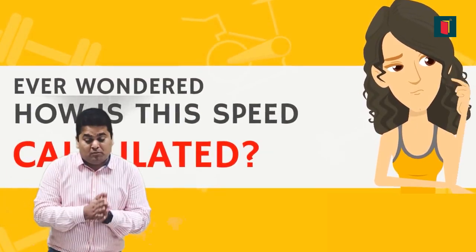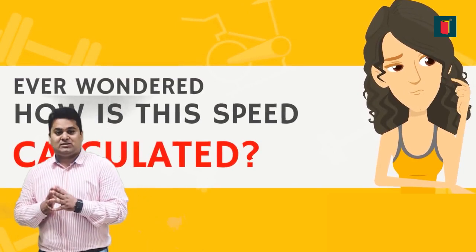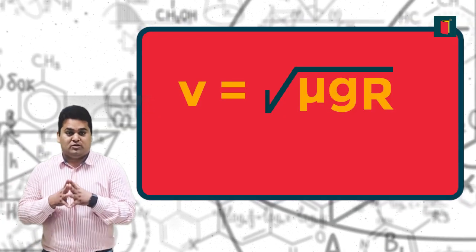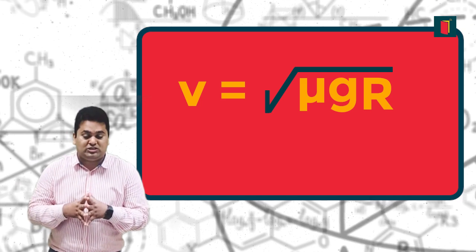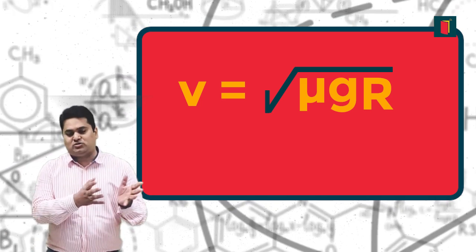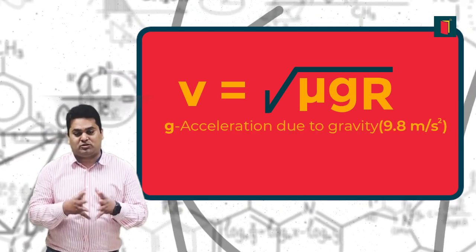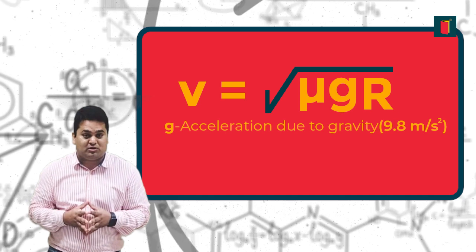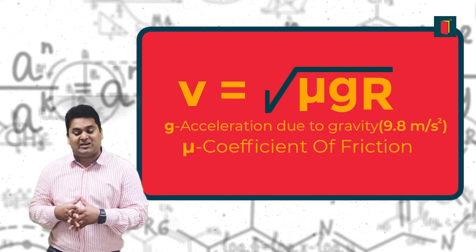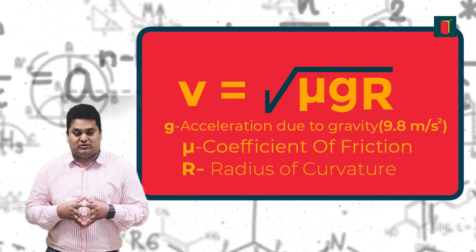The formula for this speed is the square root of μgr, where g is your acceleration due to gravity, which on Earth is 9.8 meters per second squared, μ is the coefficient of friction, and r is the radius of the turn.